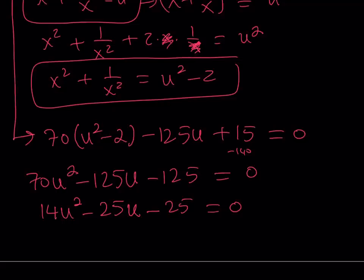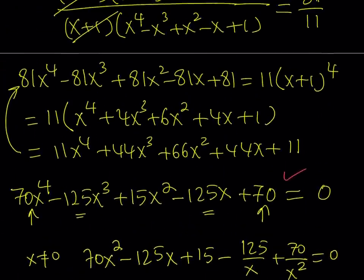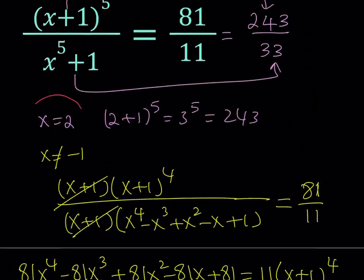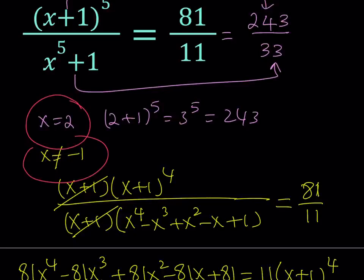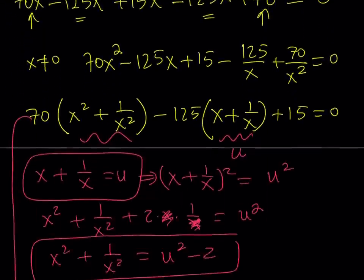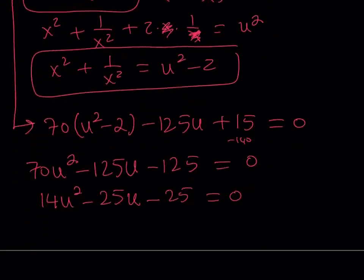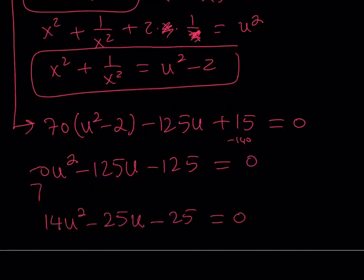Now remember that u = x + 1/x, and we're going to back-substitute to find the x values. We already know x equals 2 is a valid solution, and x equals negative 1 is not a solution. I'll go ahead and solve this equation using the quadratic formula, taking this expression and working with it.